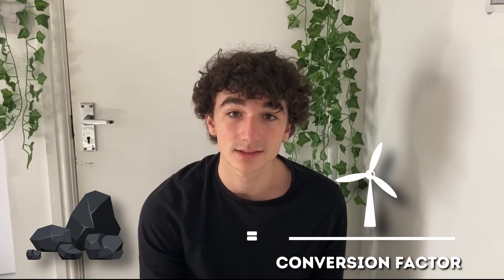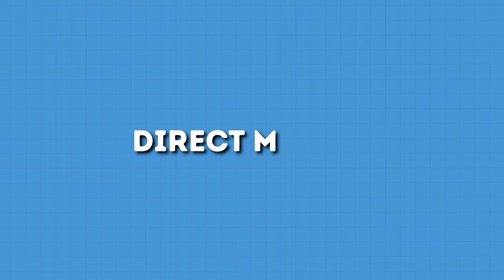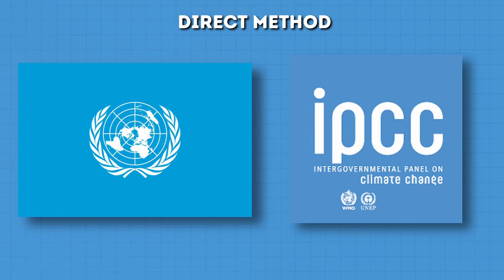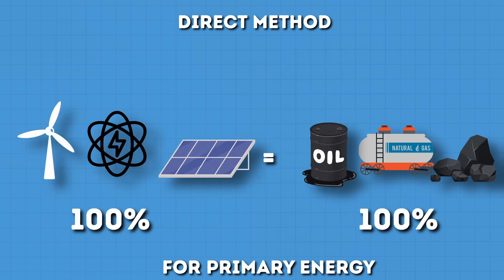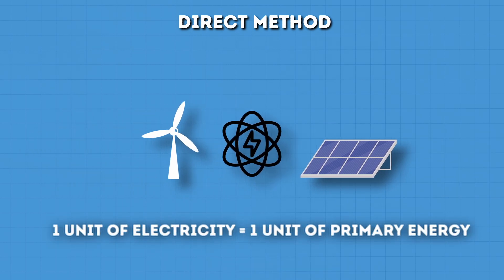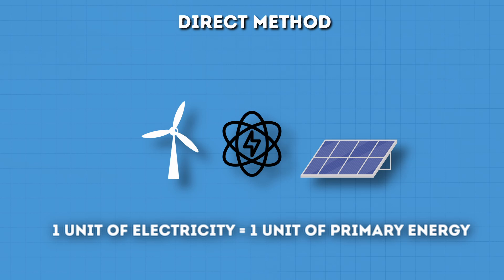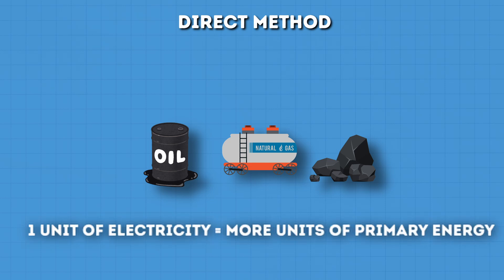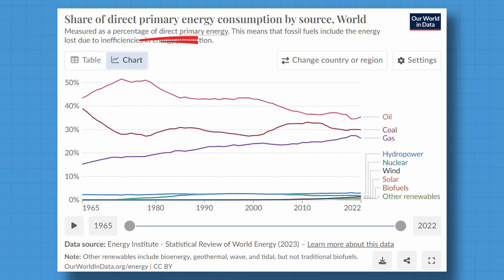In all methods, fossil fuels are the base, with renewables being the ones converted. The first method is the direct equivalent method, used by the UN and some IPCC reports. In this method, the conversion efficiency from renewables to fossil fuels is 1, or 100%. It means that for every unit of electricity generated by renewables, it is equivalent to one unit of primary energy. The issue is that to get the same amount of electricity as renewables, fossil fuels require much more primary energy — three times as much — due to inefficiencies. So if you compare it directly, the amount of energy from renewables looks like it's basically negligible.